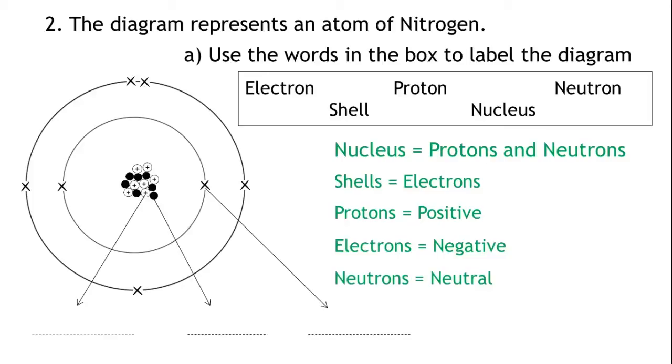If we look at the arrows on the diagram, we can see that the first arrow is pointing from a part of the atom outside the nucleus. It's pointing to a particle on a shell. Therefore this particle must be an electron. The next two arrows are coming from the central part of the atom, from the nucleus, but they are coming from two individual particles within it.